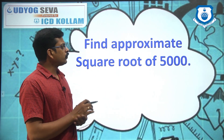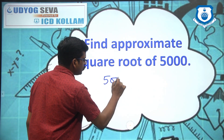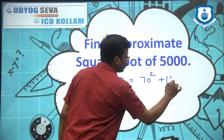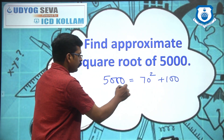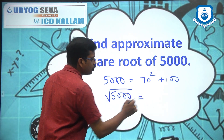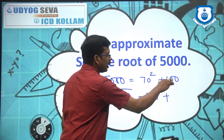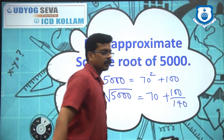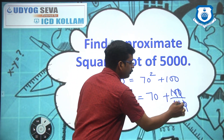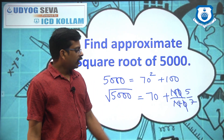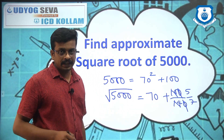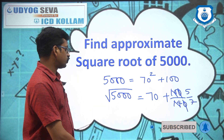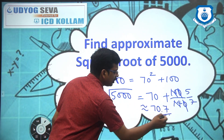Now let me discuss a big number: 5000. You know 5000 is equal to 70 squared, which is 4900, plus 100. Root 5000 will be equal to 70 plus 100 divided by 70 times 2. 70 times 2 is 140. This is 100 by 140, or simply 5 by 7. As you know, 1 by 7 is 0.14, so 5 by 7 is approximately 0.7. So the value is 70.7.